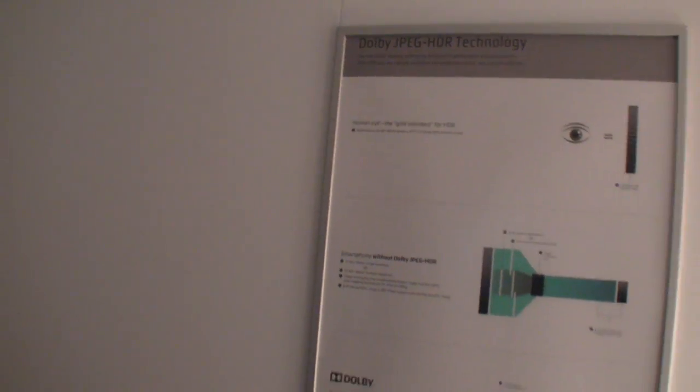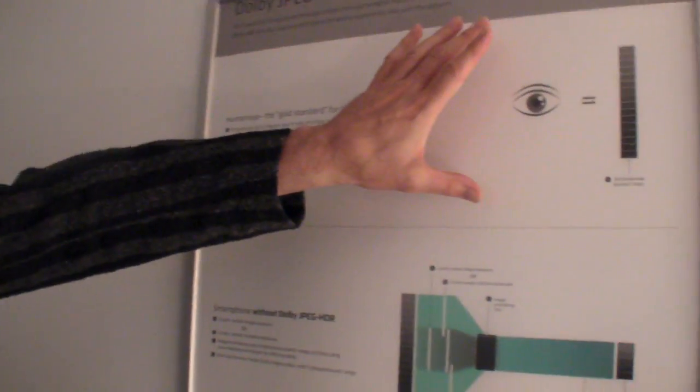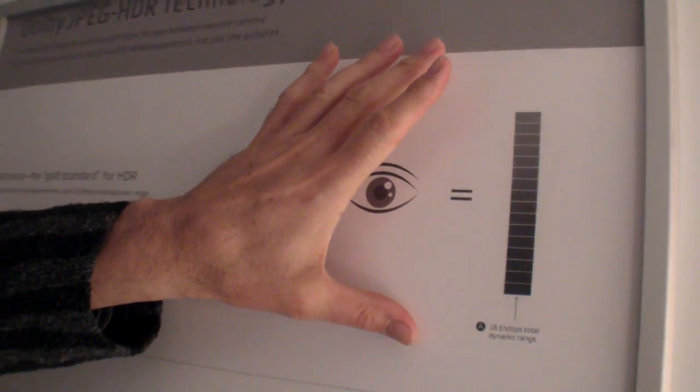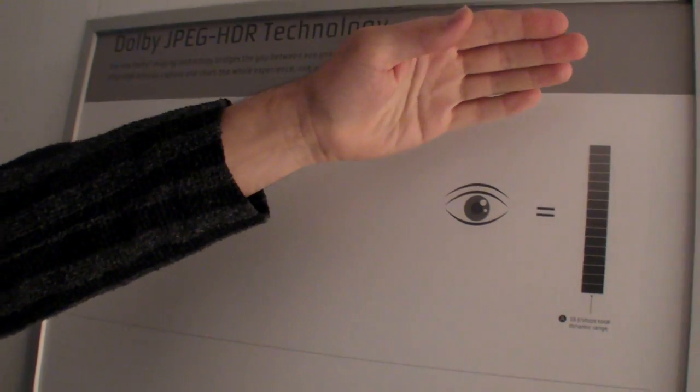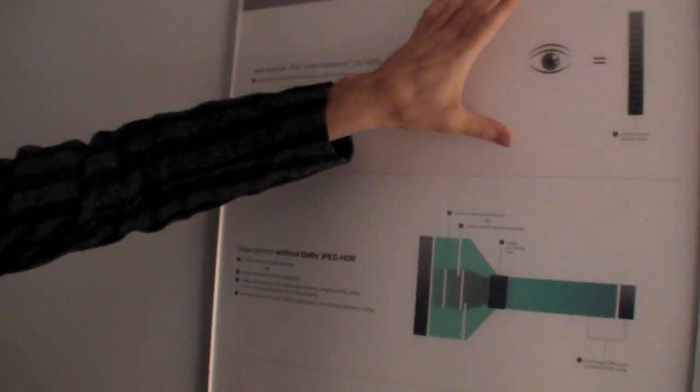We're here in the Dolby booth at Mobile World Congress, talking about JPEG-HDR. JPEG-HDR bridges the gap between what your eye can see — over five orders of magnitude of dynamic range, the difference between the brightest and darkest that we have seen — and what your smartphone or camera can capture.